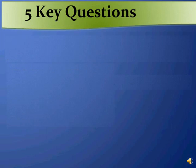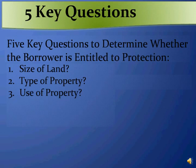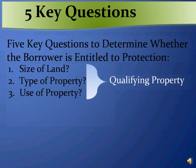In analyzing any foreclosure, we need to have answers to five key questions to determine whether the borrower is entitled to protection under either of Arizona's anti-deficiency statutes. First, we need to know the size of the land. Second, the type of property. Third, the use of the property. Those three questions determine whether the property is qualifying property under both of Arizona's anti-deficiency statutes. Fourth, the type of foreclosure that the lender is pursuing. And fifth, the type of loan.